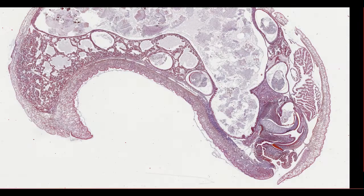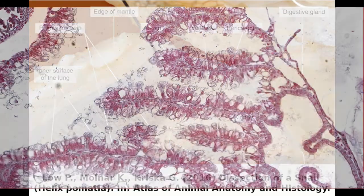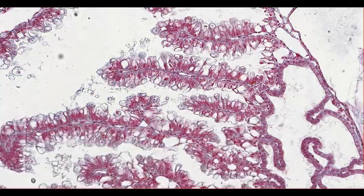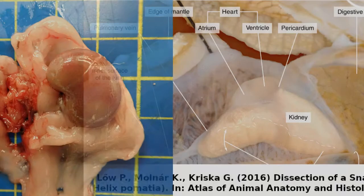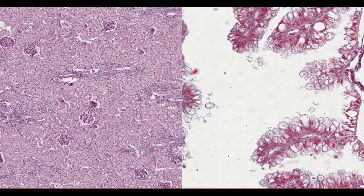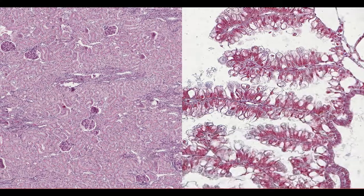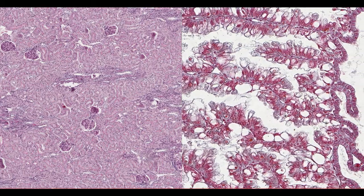Hi everyone and welcome to Down the Scope. This is a snail's kidney and this is what it looks like under the microscope. Compare that to a mammalian kidney and you might be wondering how the snail manages to filter its blood with a seemingly simpler organ system. Here's a quick five-point summary.